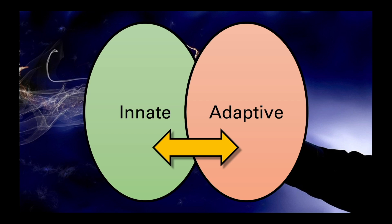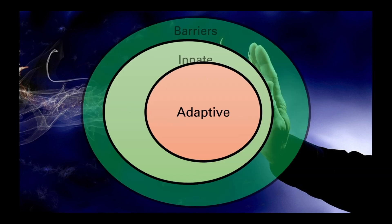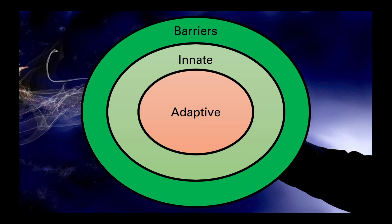The first layer of the innate system comprises a series of barriers and chemical mediators that try to prevent pathogens from entering our body in the first place, which is then backed up by a second layer of cellular and soluble components if that first line of defence is breached. Finally, the third layer is the adaptive immune system, which although it takes longer to become activated, has a much more specific and targeted response.